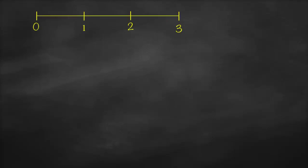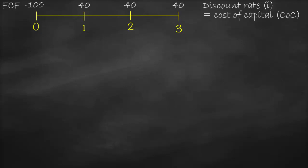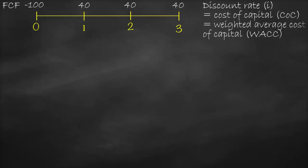Let's assume that we have the same example, which means we're going to have a project for three years. At year zero, we need to pay $100 million, and we will receive $40 million at the end of each year for the next three years. And we have our discount rate, which is I, which we call the cost of capital, which we call the weighted average cost of capital.